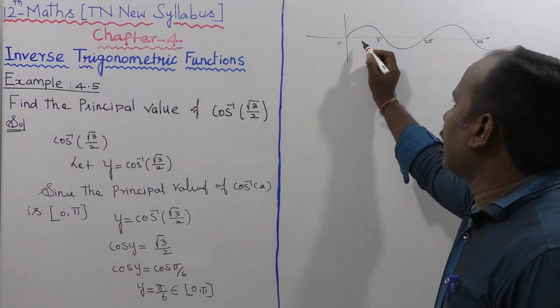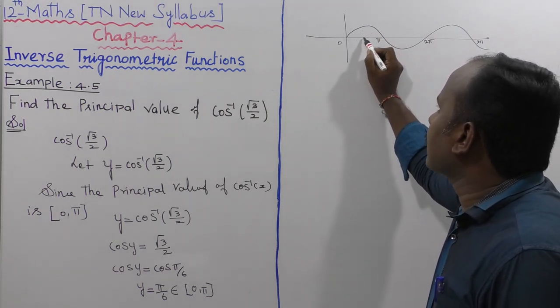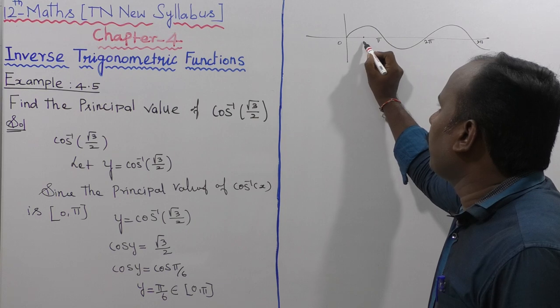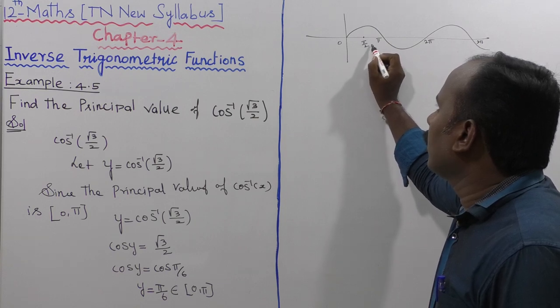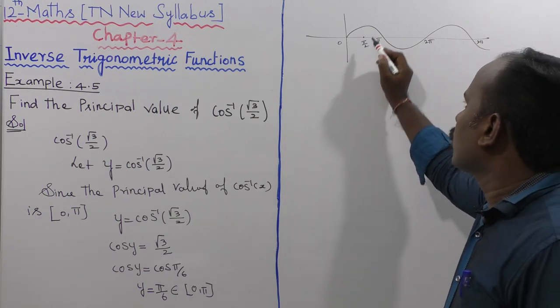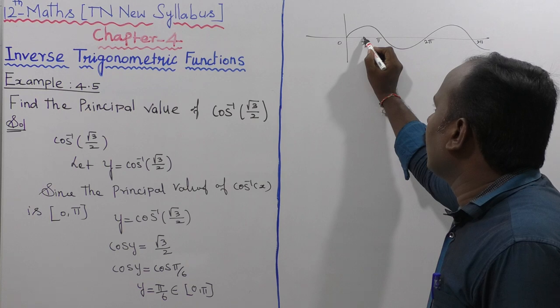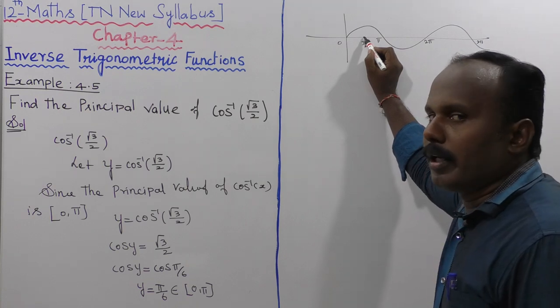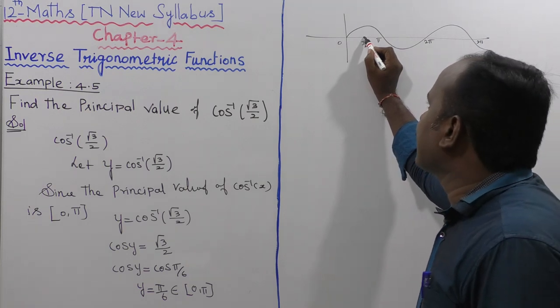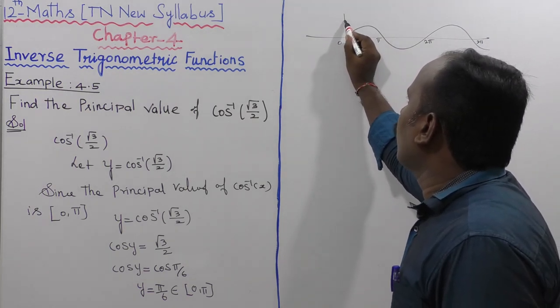The cos diagram: cos of π by 2 — this is π by 2. At π by 2, cos theta is 0. And cos theta is 1 at 0.